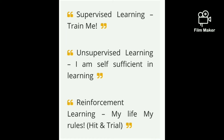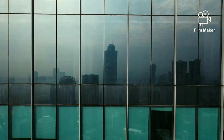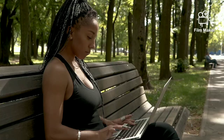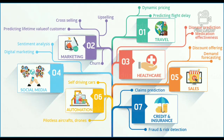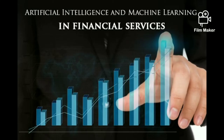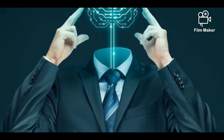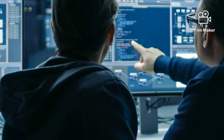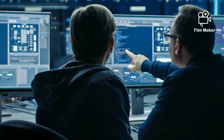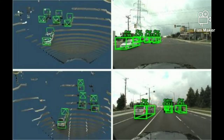Who uses machine learning? Most industries working with large amounts of data have recognized its value. In financial services, banks and other businesses use machine learning for two key purposes: to identify important insights in data and to prevent fraud. The insights can identify investment opportunities or help investors know when to trade. Data mining can also identify clients with high-risk profiles or pinpoint warning signs of fraud.